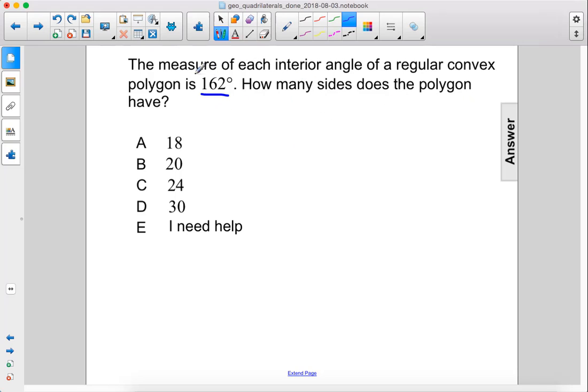Alright, we'll begin with our equation for the measure of each interior angle, which is (n-2) times 180 over n. Set that equal to 162 and solve for n.